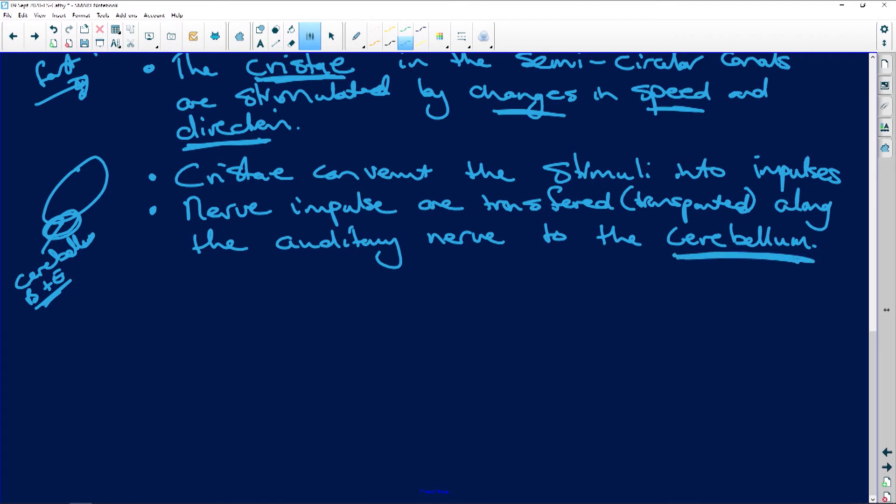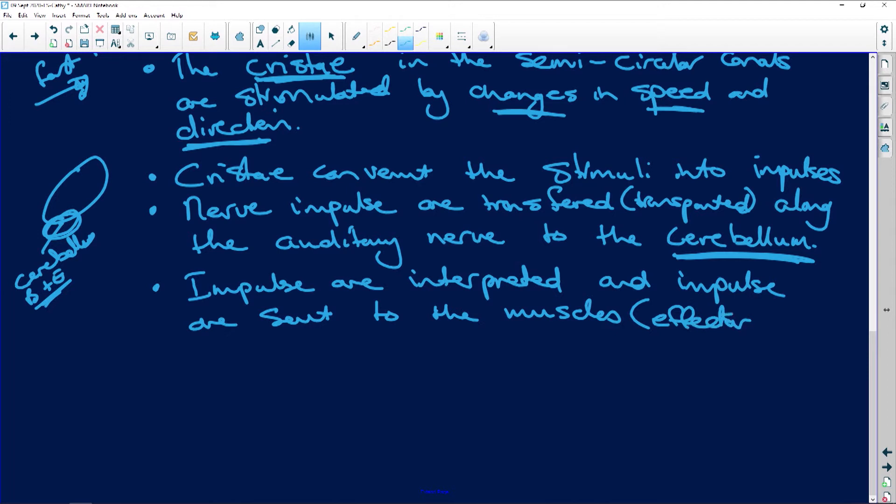And impulses are interpreted and impulses are sent to the muscles, which are your effectors - they are what is affected, your effectors - to restore balance.